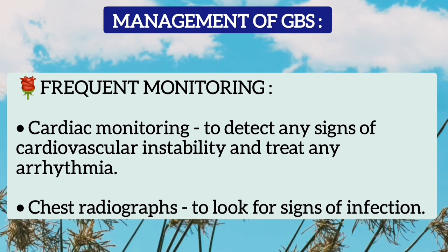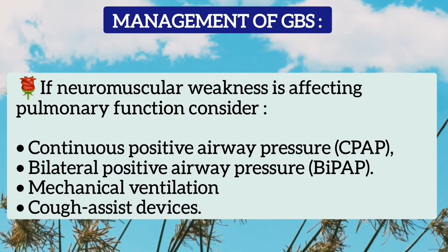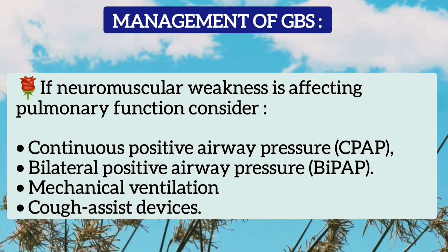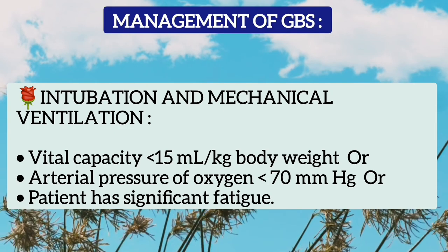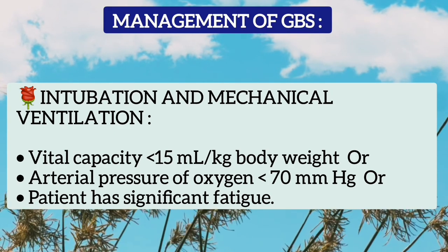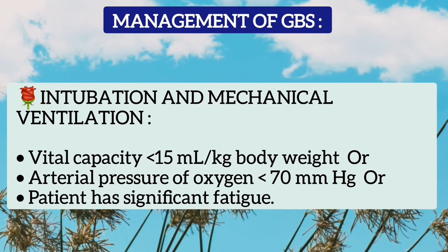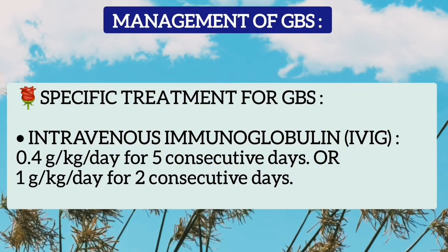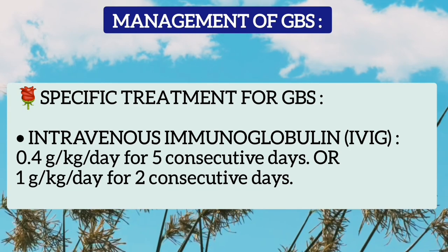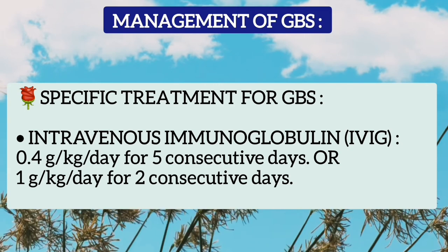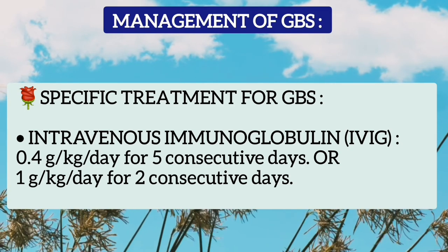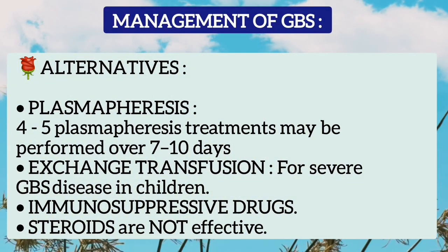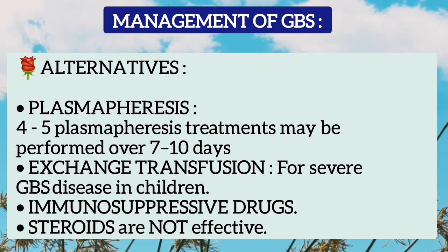Chest radiograph should be taken to look for signs of infection. If neuromuscular weakness is affecting pulmonary function, consider CPAP, BiPAP, mechanical ventilation, and cough-assist devices. Intubation and mechanical ventilation are recommended when vital capacity is less than 15 ml per kilogram body weight, arterial oxygen pressure is less than 70 mmHg, or the patient has significant fatigue. Specific treatment includes intravenous immunoglobulin, given at 0.4 g/kg/day for 5 consecutive days or 1 g/kg/day for 2 consecutive days. Other alternatives include plasmapheresis, exchange transfusion, and immunosuppressive drugs; however, steroids are not effective in GBS.